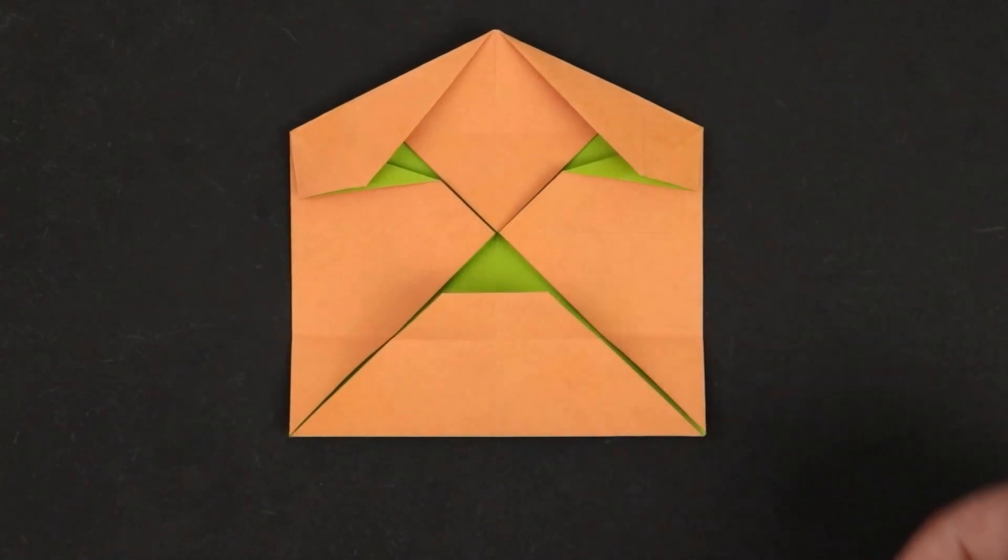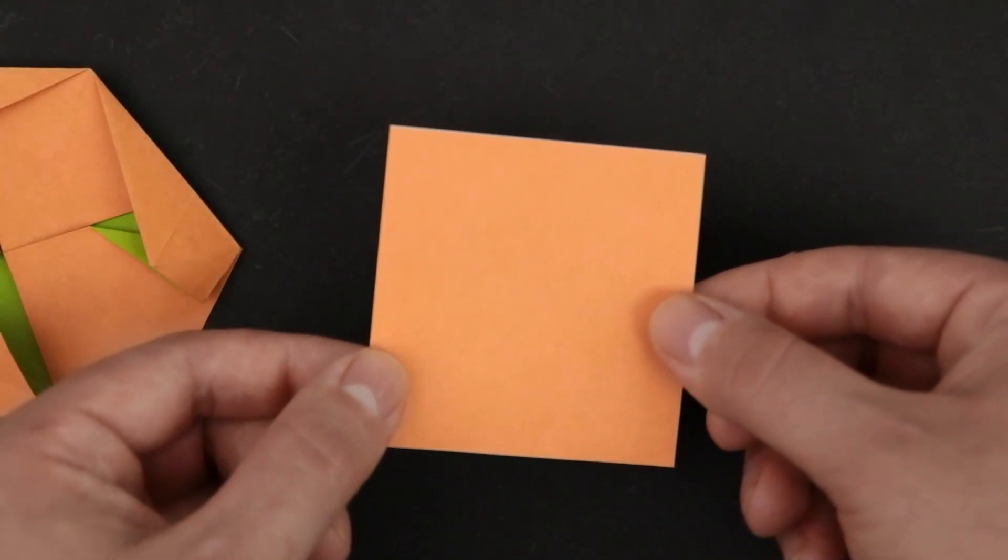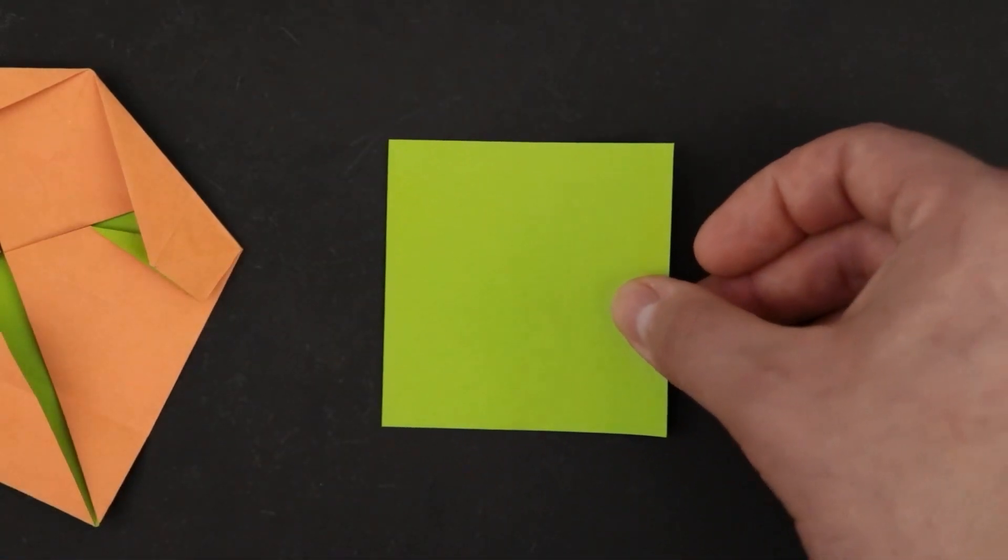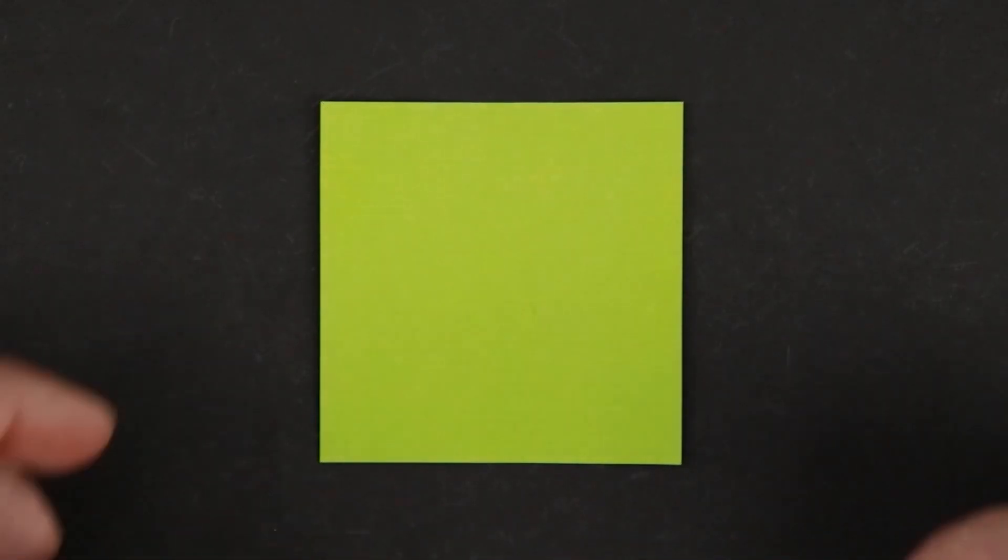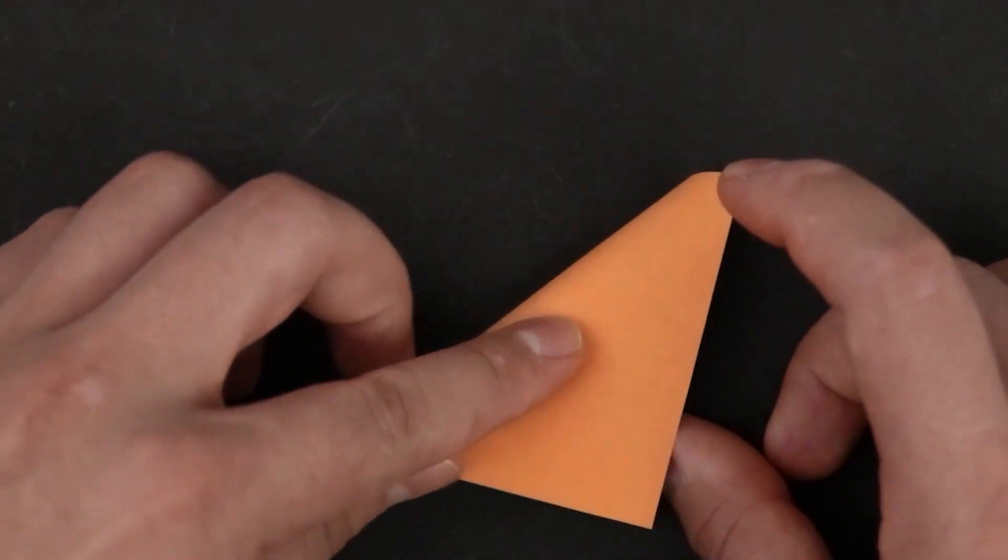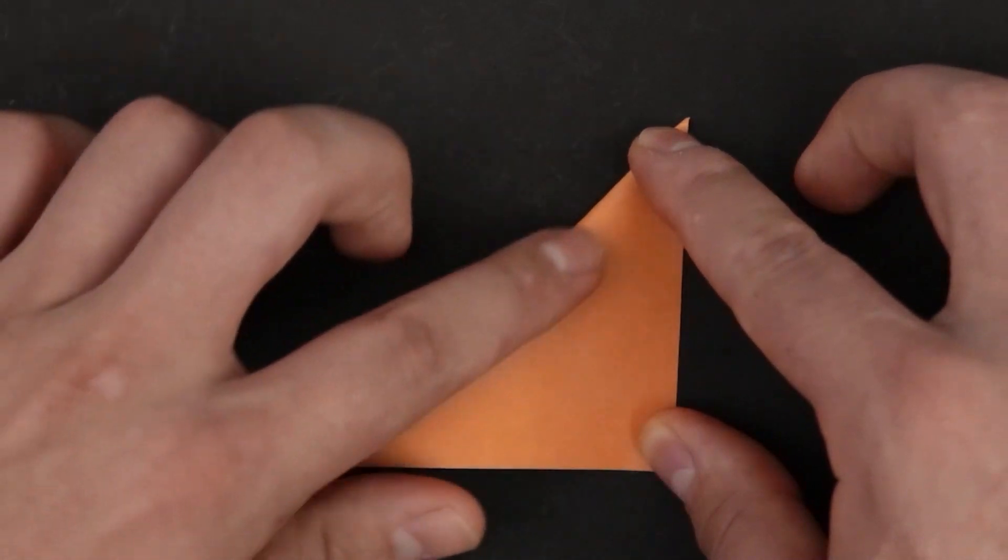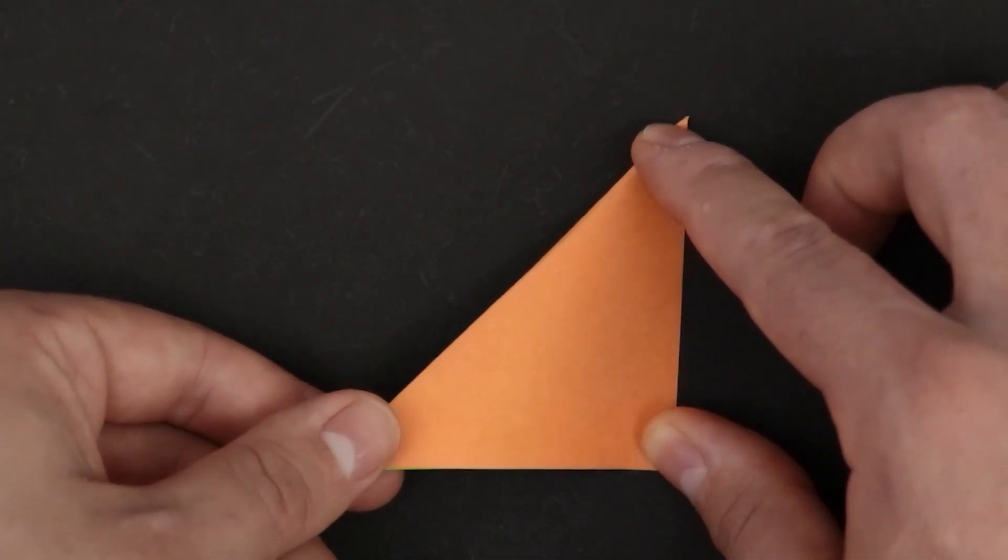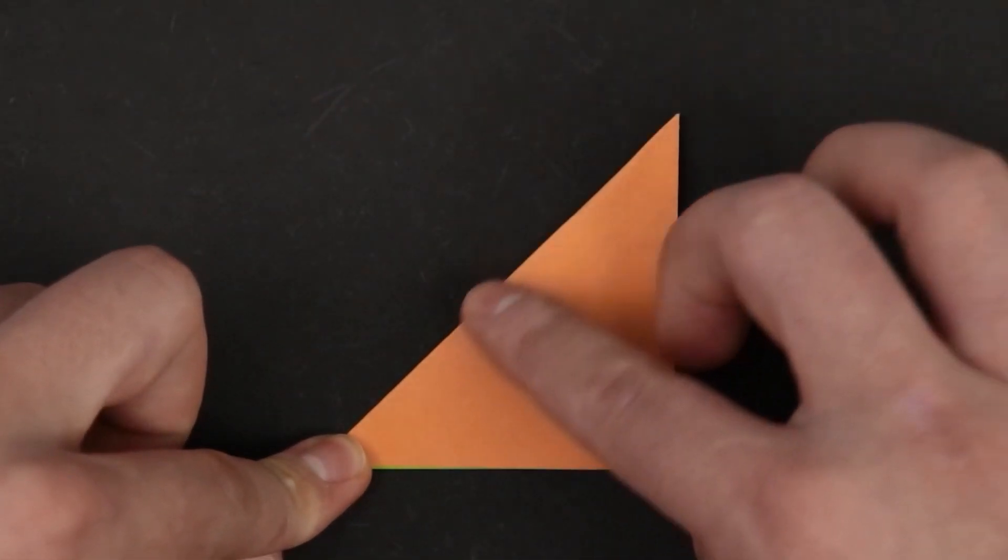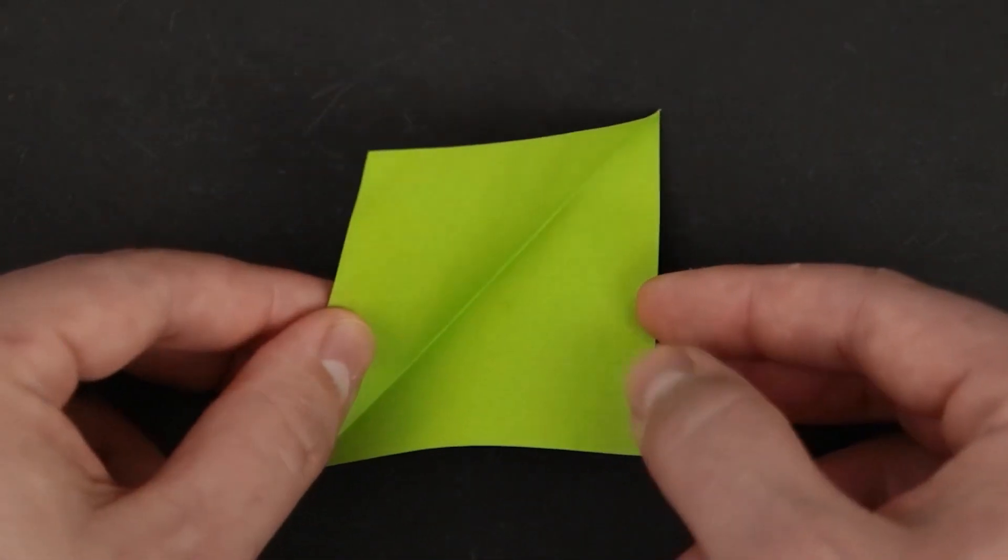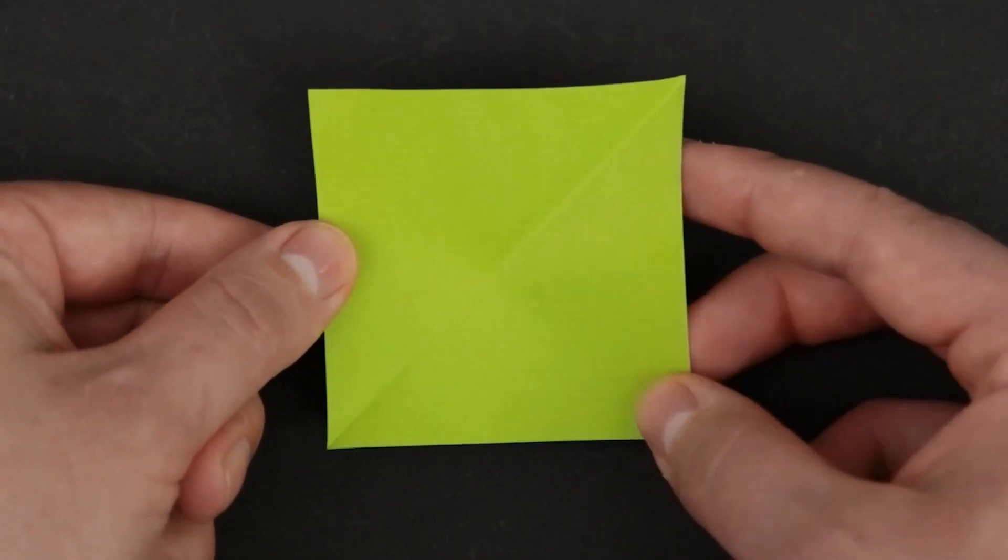Let's leave the main part like that for a while. Now let's make the teeth and just like before, start with the orange side facing down and let's start by folding in half along both diagonals. Just bring one corner to the other, unfold and do the opposite.